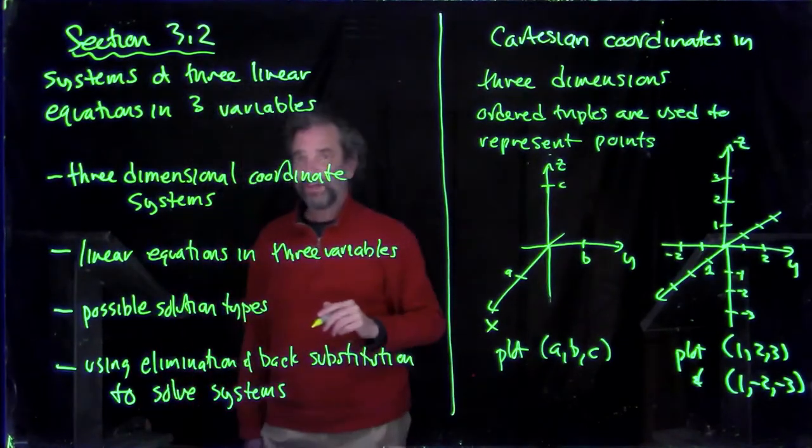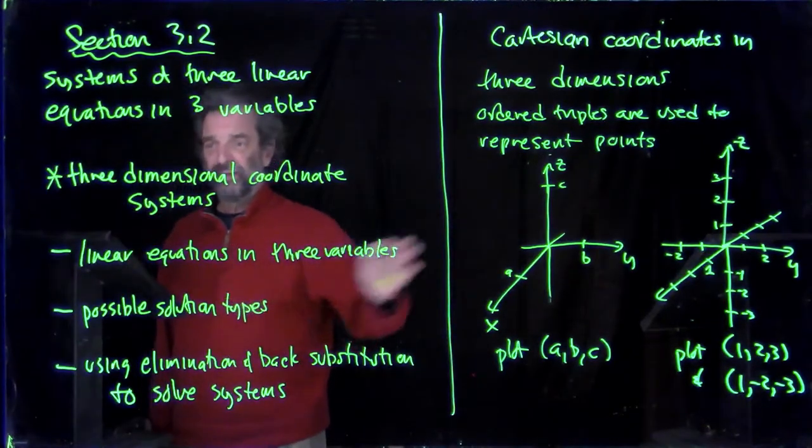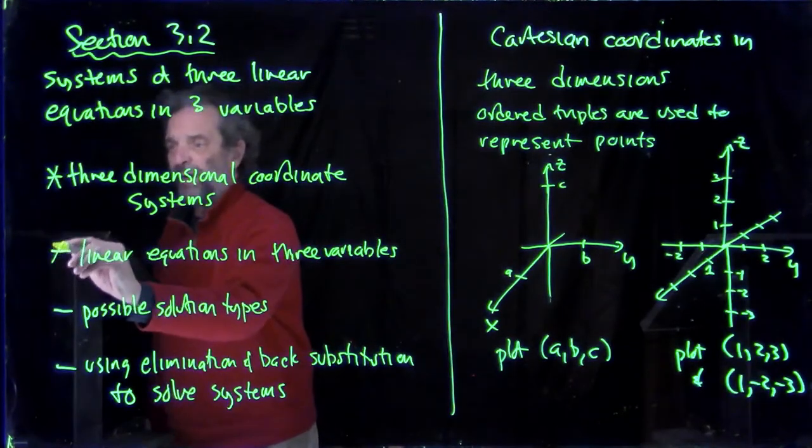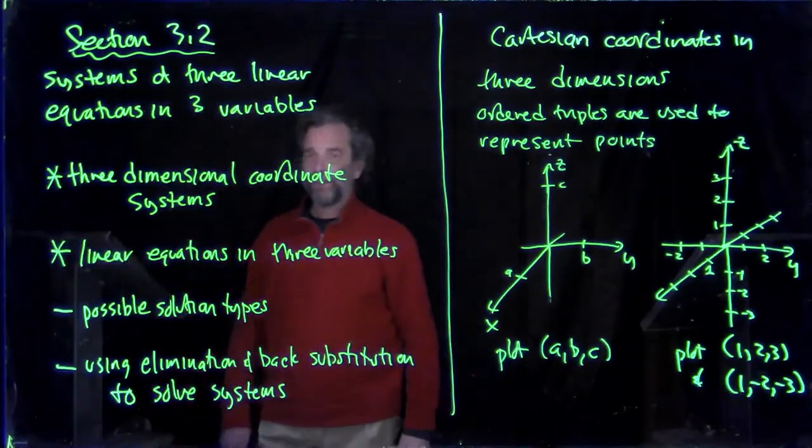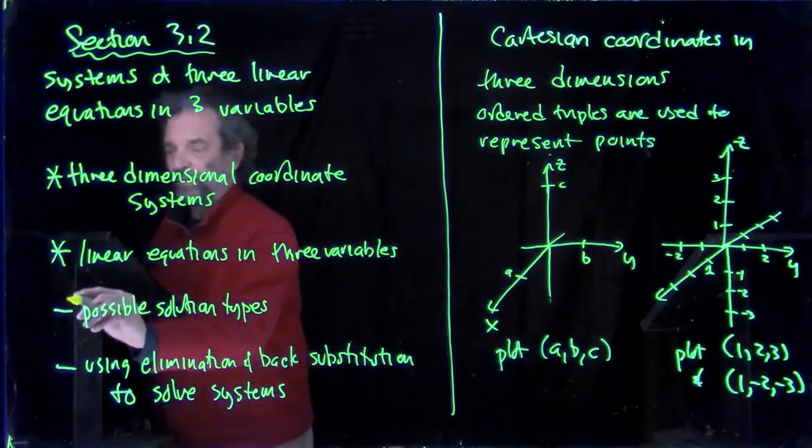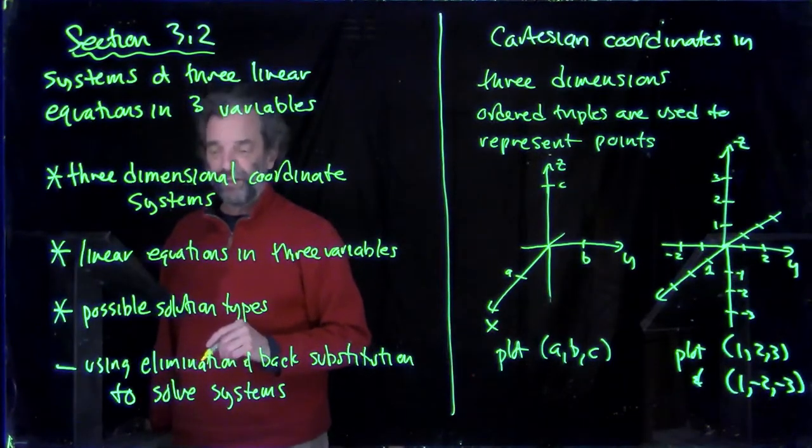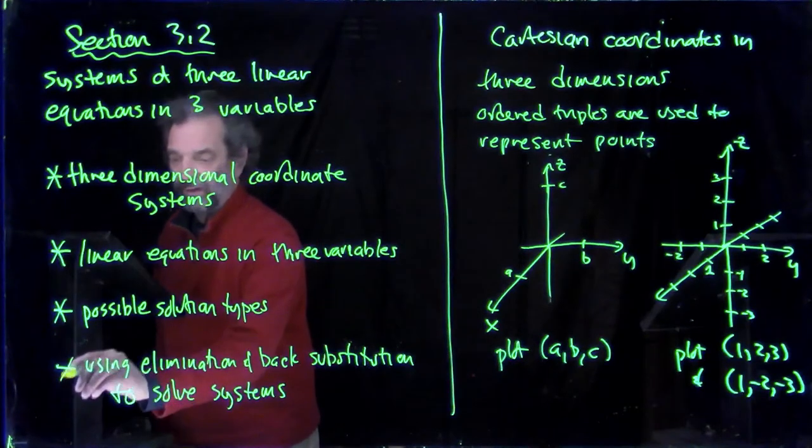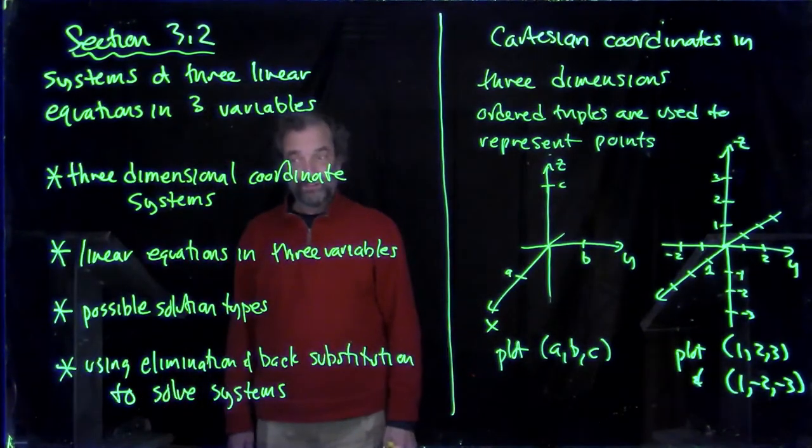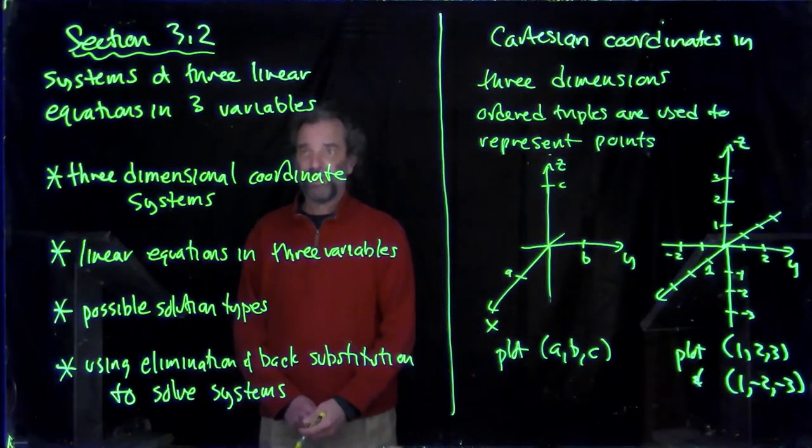The topics in this section are: what about three-dimensional coordinate systems, what do they look like? There's some over there. We'll do that in a minute. What do we know about linear equations in three variables? Nothing right now. What kinds of solutions can you have when you have a system of three linear equations and three variables? And finally, what's the process to solve the system? We're going to use elimination and back substitution to solve the system. Three equations, three unknowns.